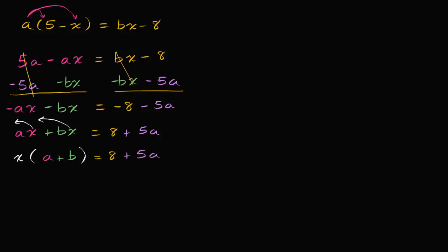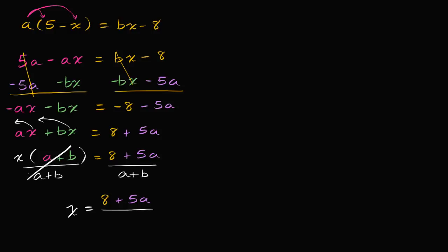We're in the home stretch now. We can just divide both sides by a plus b. And we're going to be left with x is equal to eight plus five a over a plus b. And we're done. We have now solved for x in terms of a's and b's and other things.